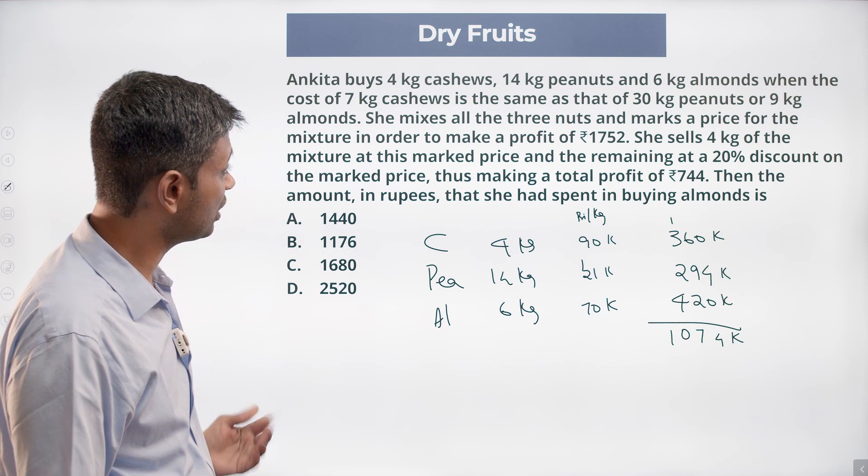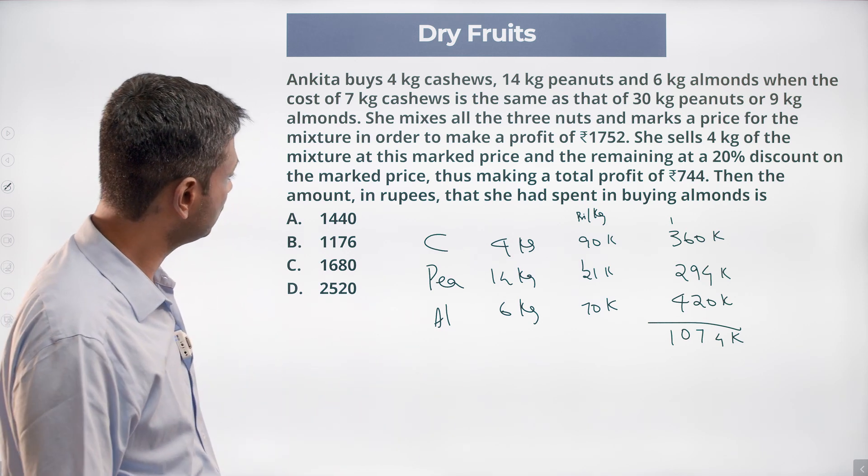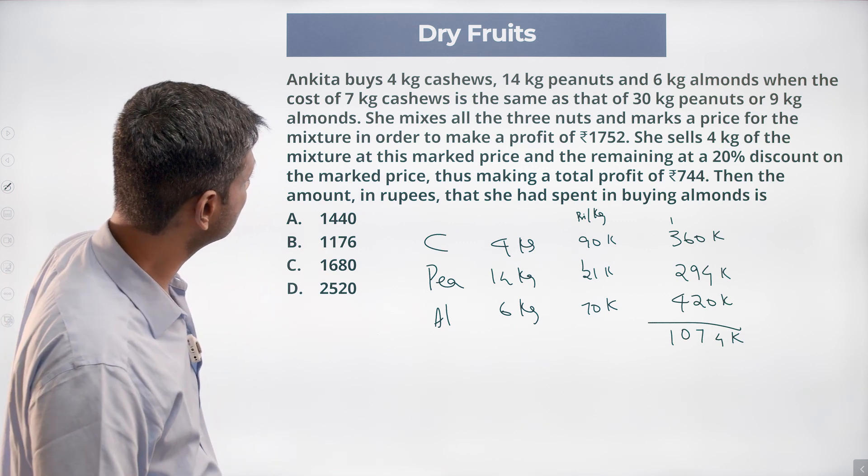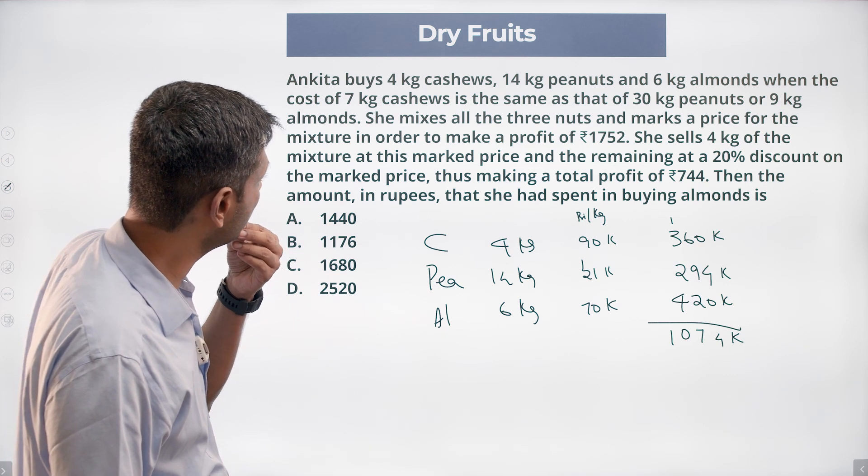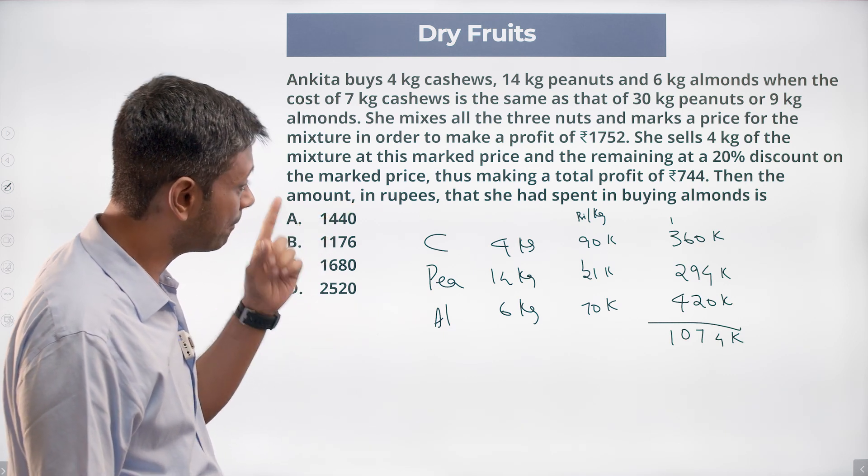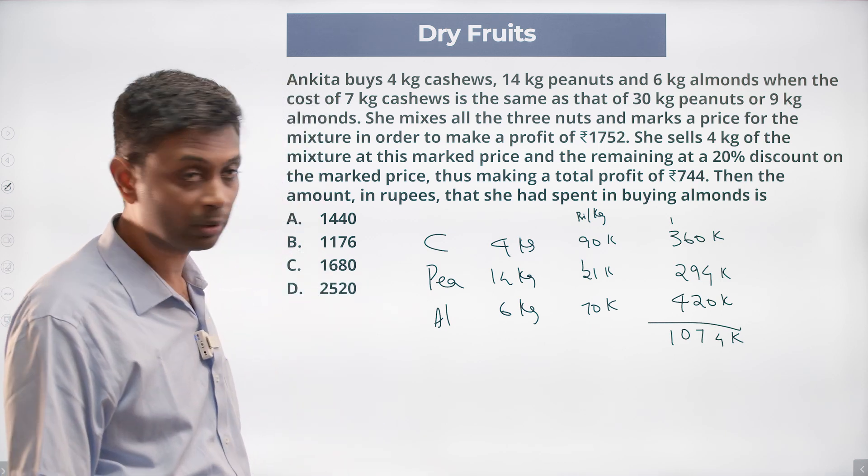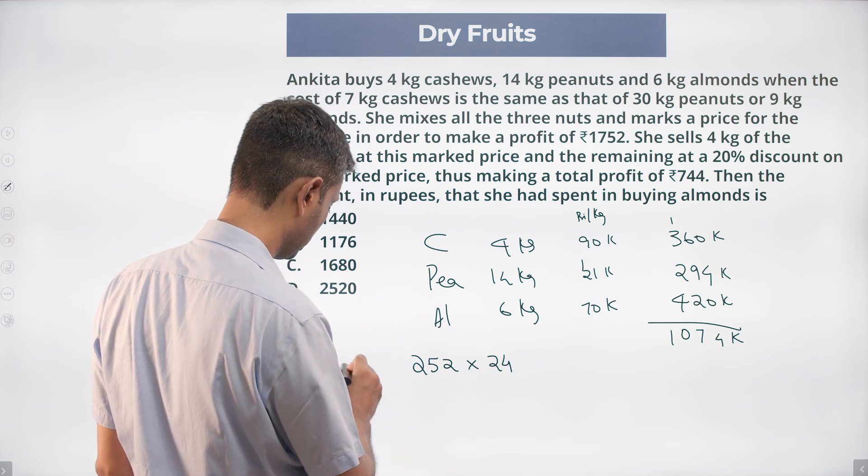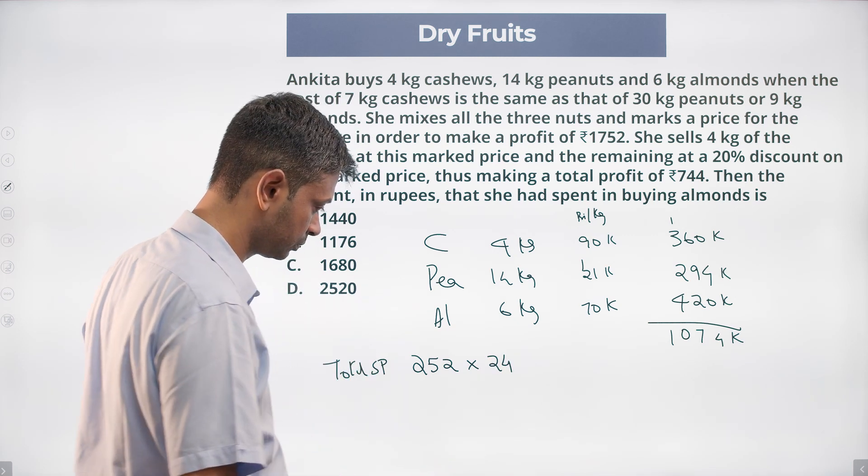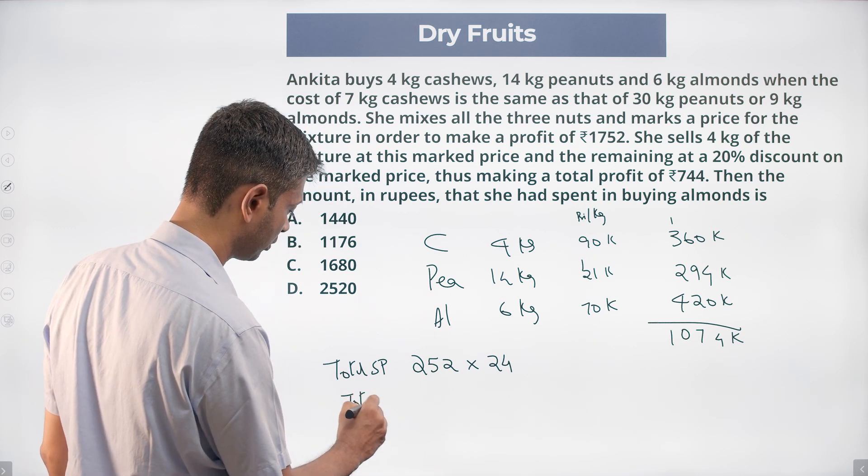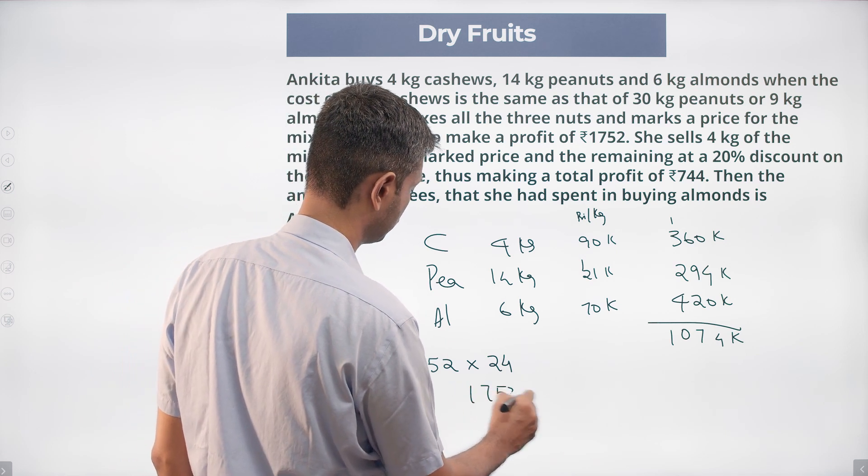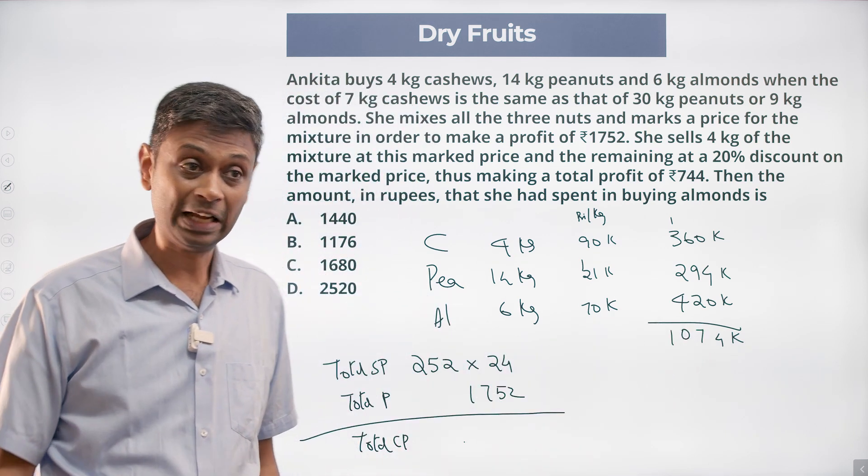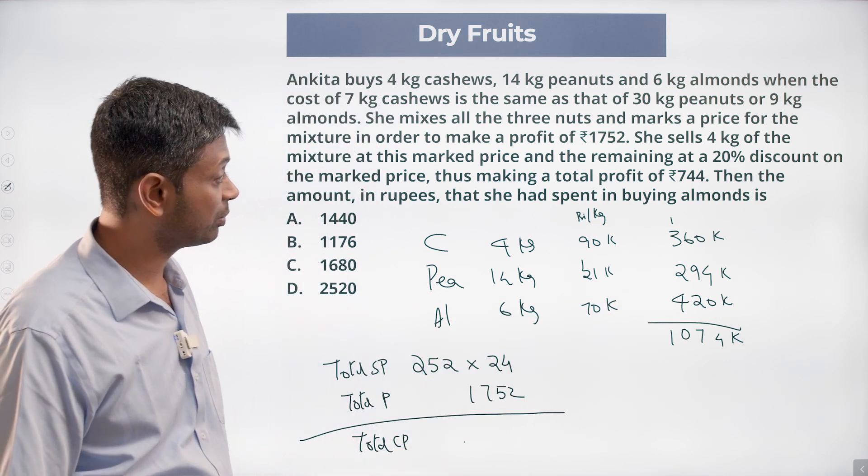We still not done. We need to find the amount of money she spent. This amount of money she has spent, and then she makes the total amount of profit she makes, this total cost. She makes a profit of 1752 by marking it up at 252 per kilogram. So 252 into 24, that's the total selling price. And then our total profit is 1752. Subtract this from this, we'll get total cost price. That number equals 1074K. From that we'll have to find 420K, which happens to be the amount of money she spent in buying almonds.